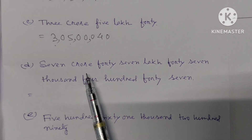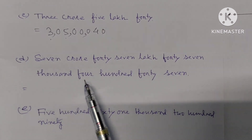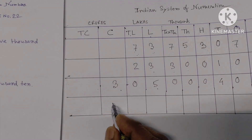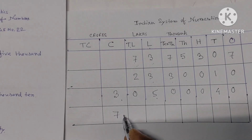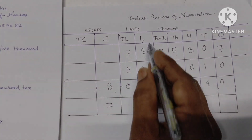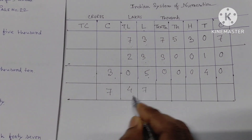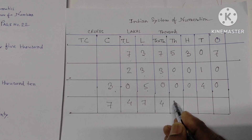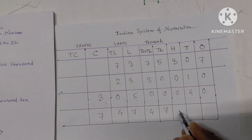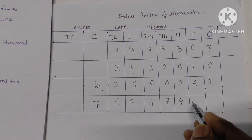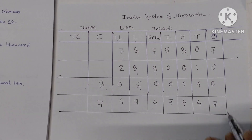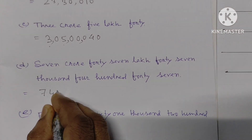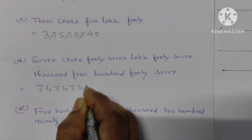Part (d): seven crore forty-seven thousand four hundred forty-seven. We can write this in the chart. Seven crore, then forty-seven thousand four hundred forty-seven. The answer is 7,47,47,447.